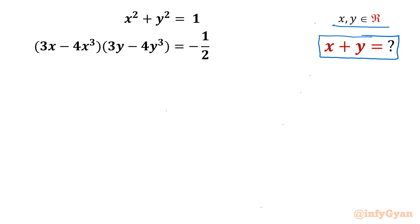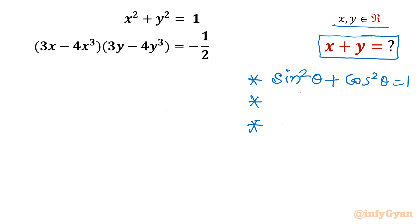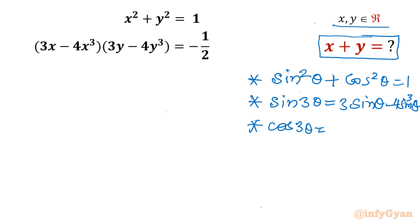Let's get started by writing three powerful trigonometric formulas or identities. The very first one is sin squared theta plus cos squared theta equals 1. The second trigonometric identity is the sin 3-theta formula: sin 3theta equals 3 sin theta minus 4 sin cubed theta. The third one is the cosine 3-theta formula: 4 cos cubed theta minus 3 cos theta.